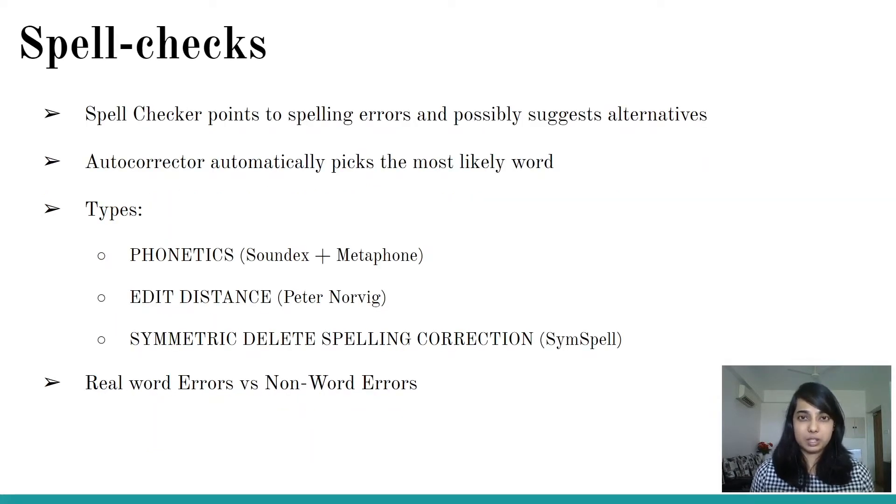So what really is a spell check? It's a functionality which detects spelling errors and possibly suggests alternatives. And based on the best alternative, you have an autocorrector which automatically replaces the wrong spelling. There are different algorithms which govern this spell check functionality and we will be going through each such algorithm and understanding how they differ and where to use what.